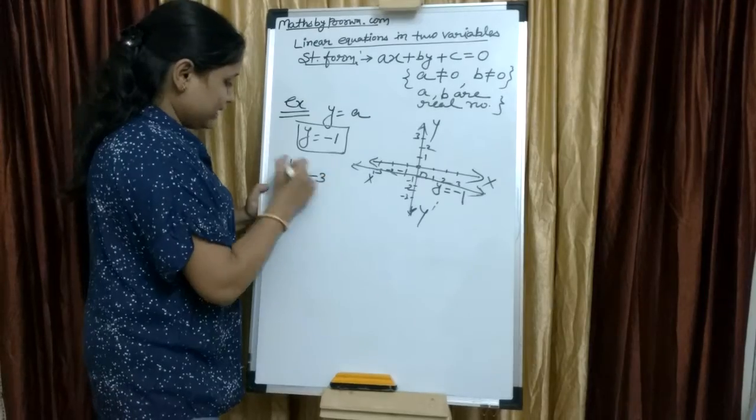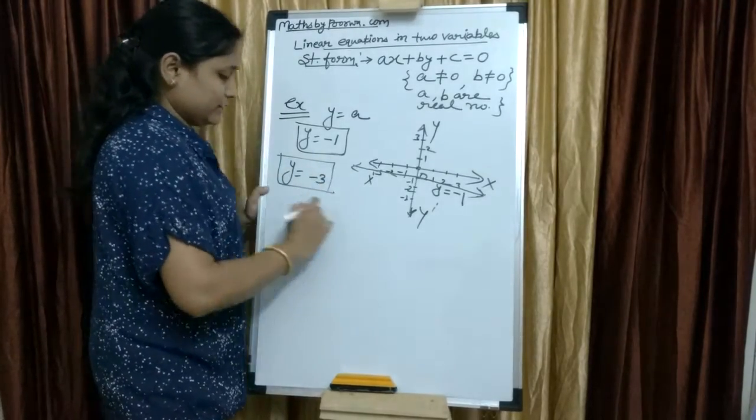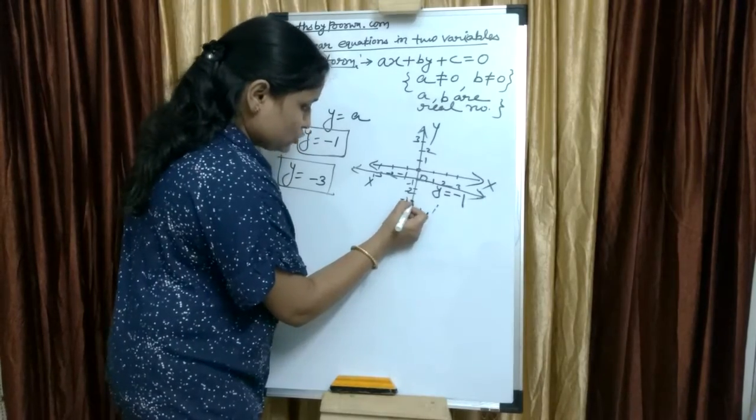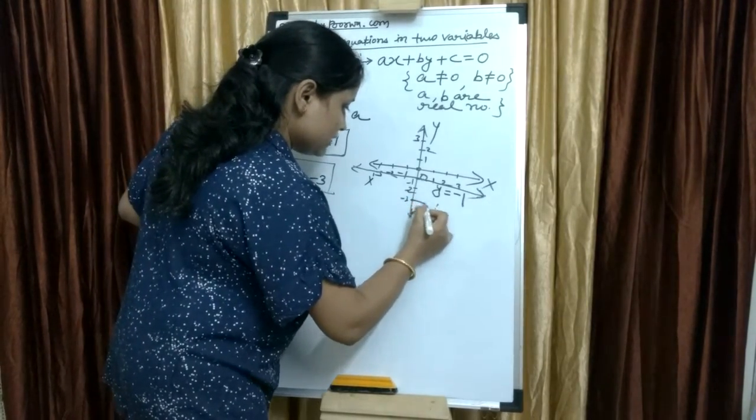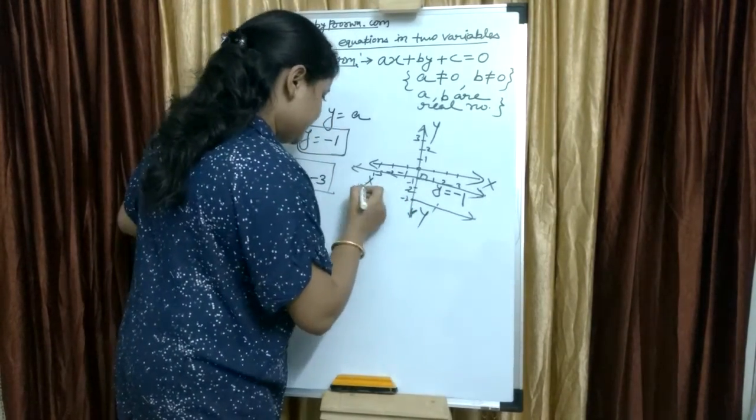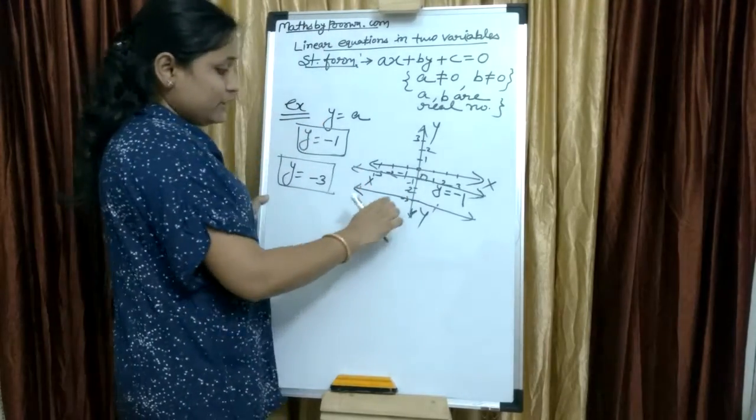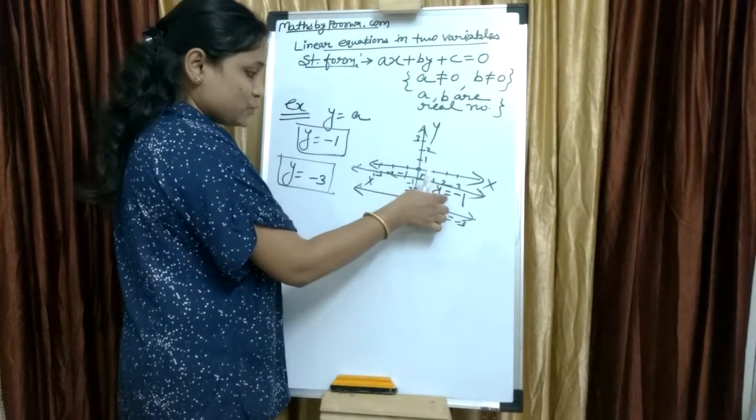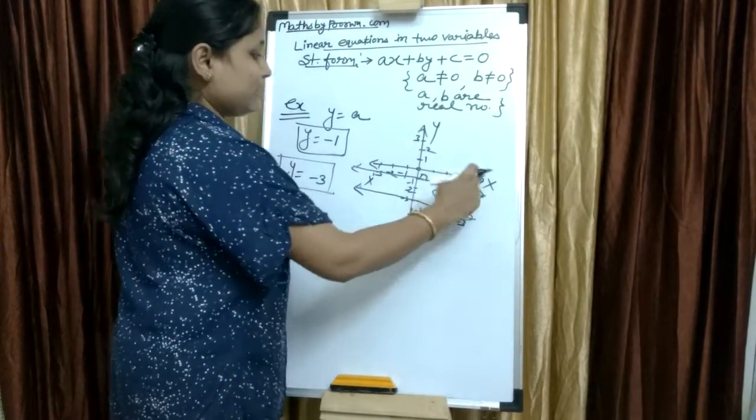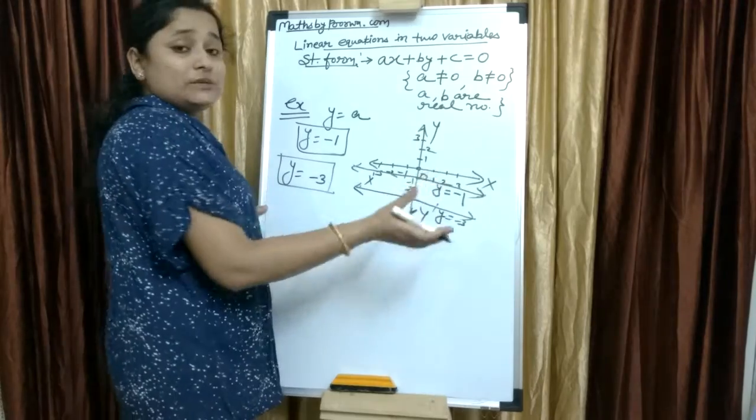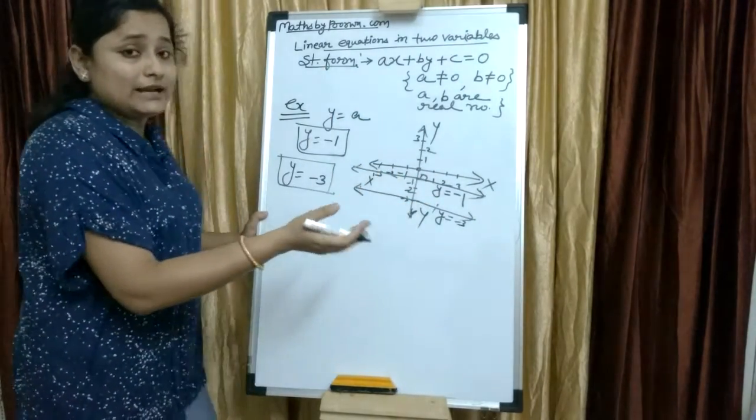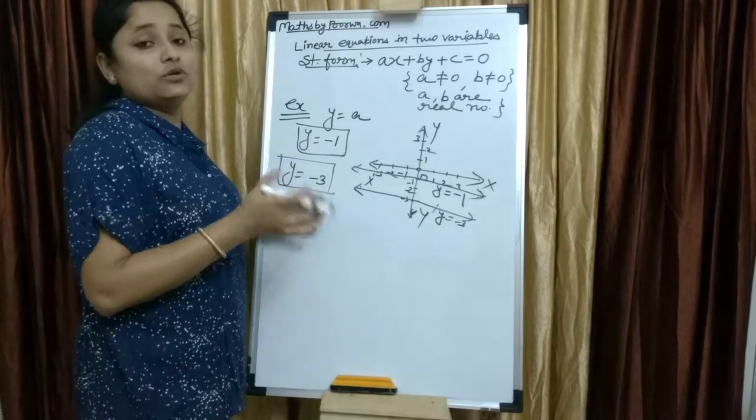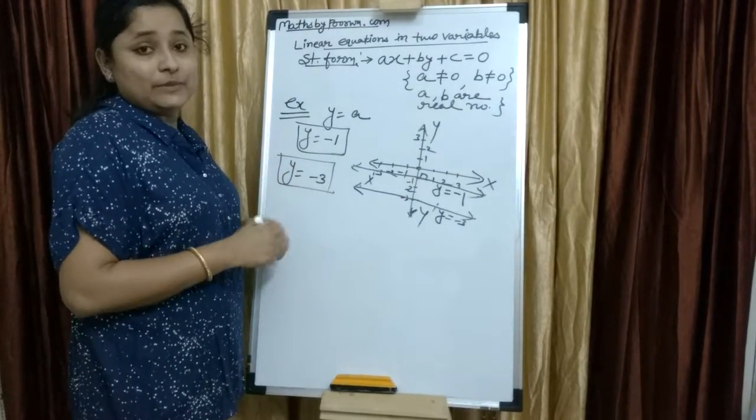If Y equals to minus 3, then the graph y equals to minus 3, and y equals to a type graph which is parallel. Y equals to minus 3. So, you have to keep these concepts in mind during exam time.